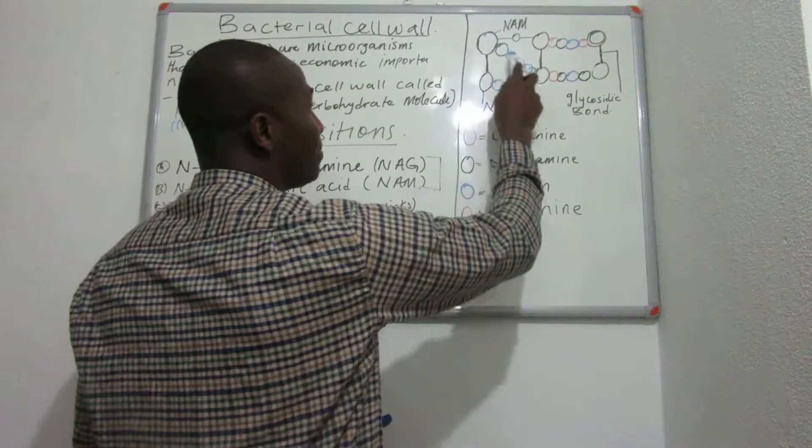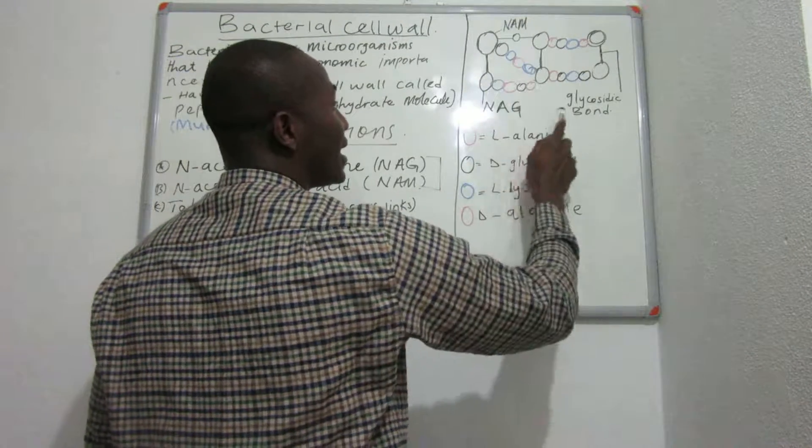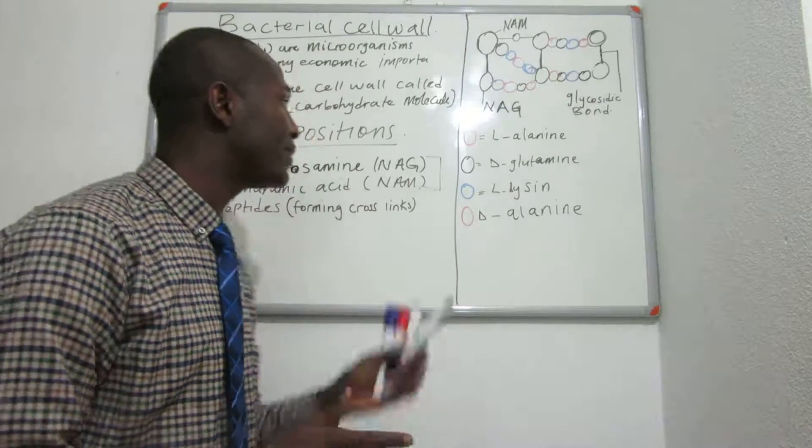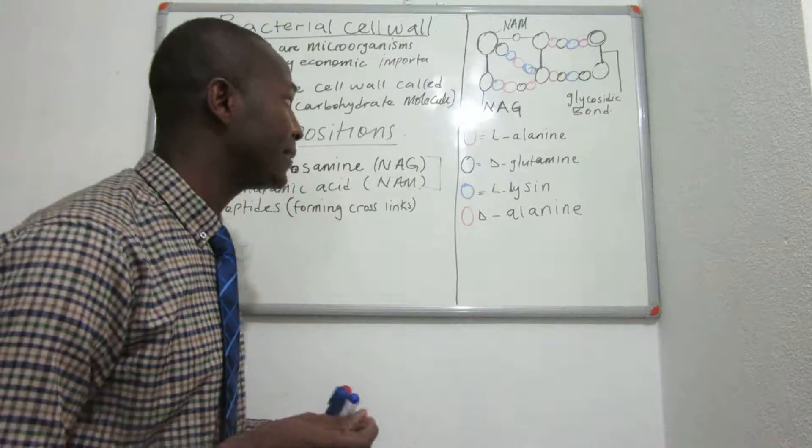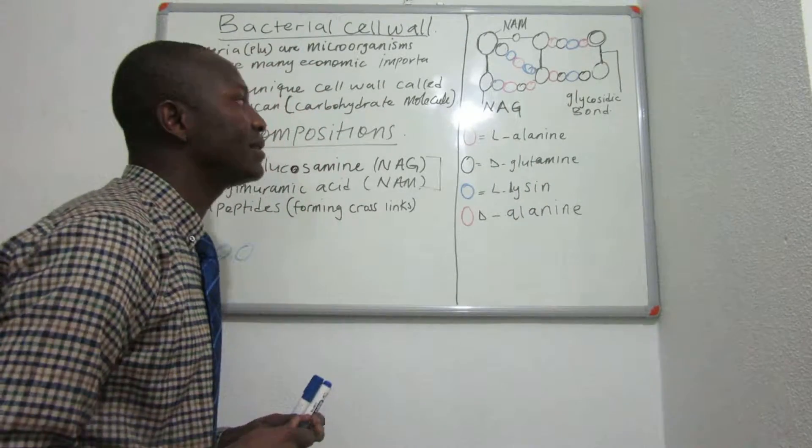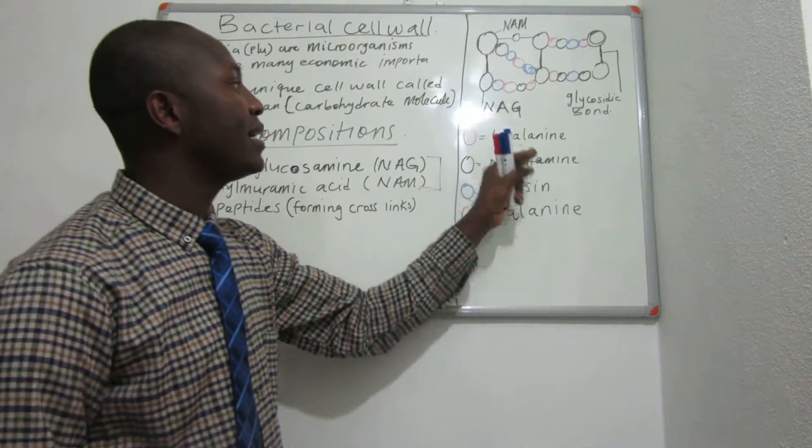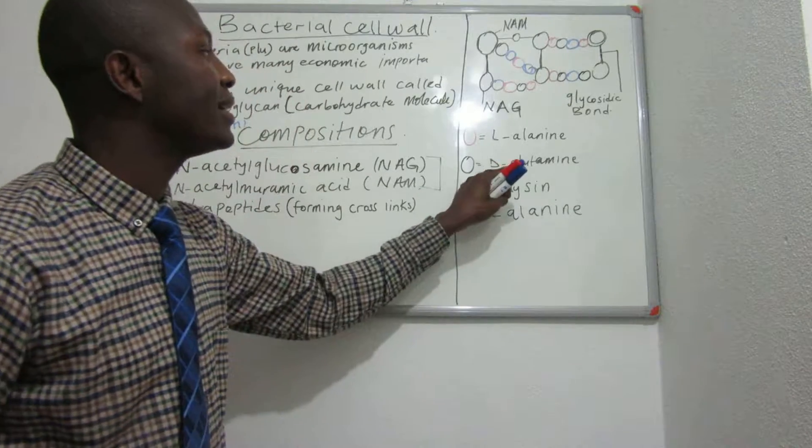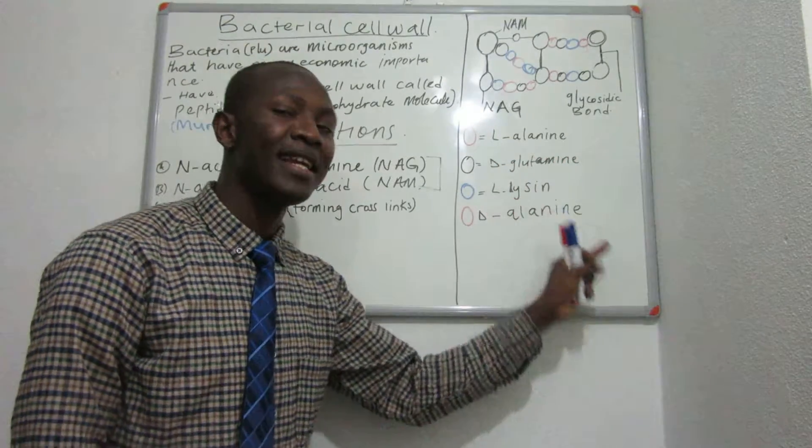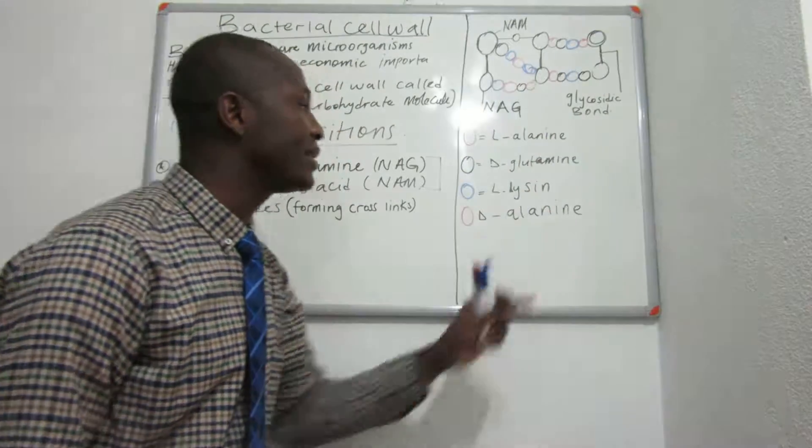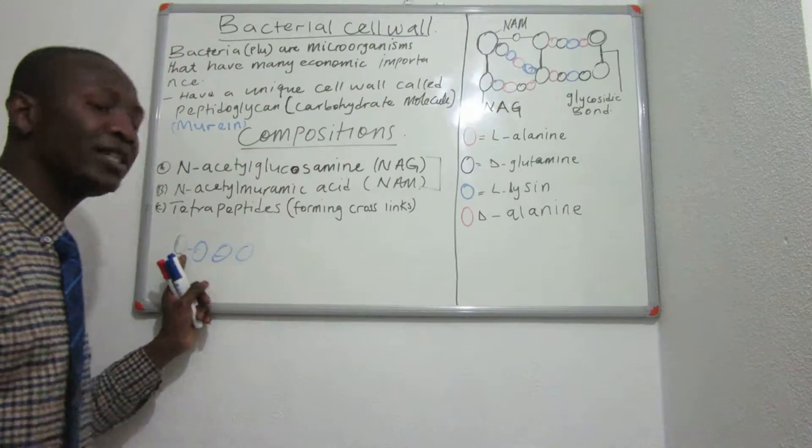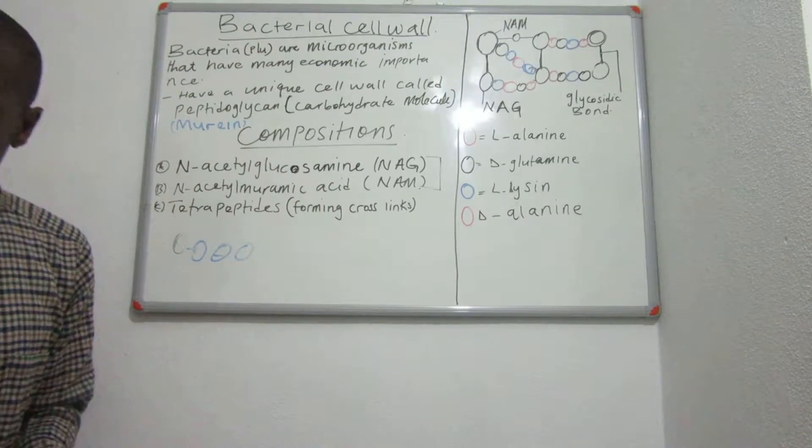These tetrapeptides plus the NAM and the NAC are the components of the cell wall structure of the bacteria. These four tetrapeptides are L-alanine, D-glutamine, L-lysine, and D-alanine. All these are peptides that combine to form this tetrapeptide structure of the bacterial cell wall. This is the composition of the bacterial cell wall.